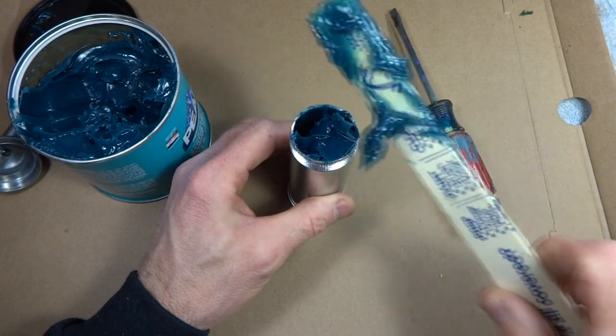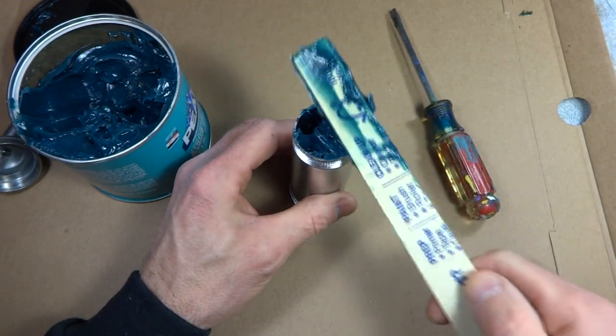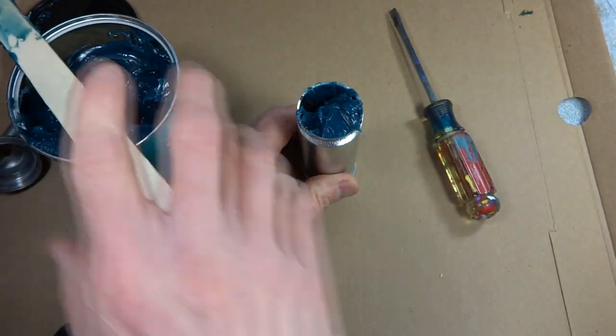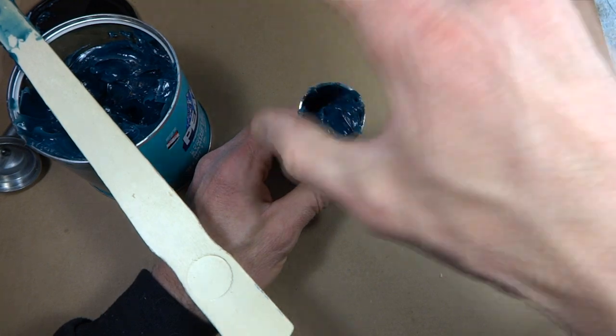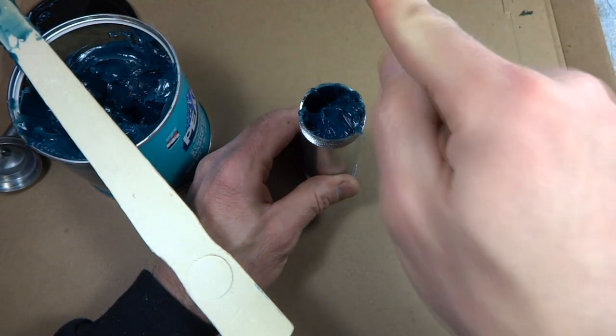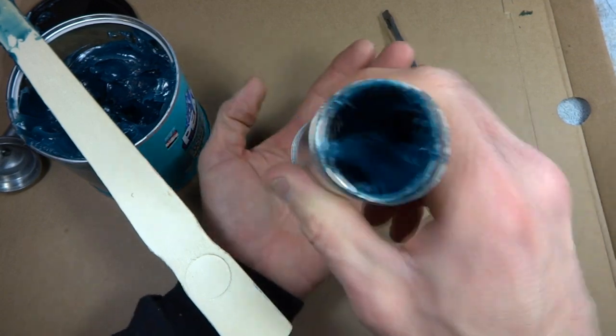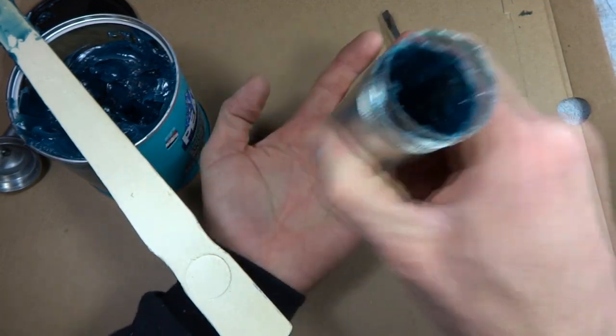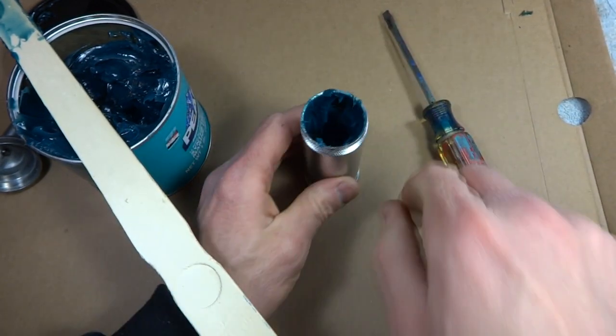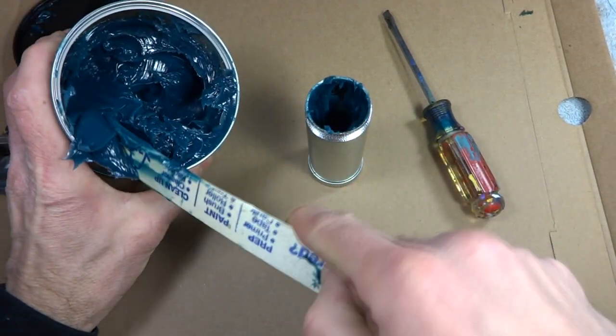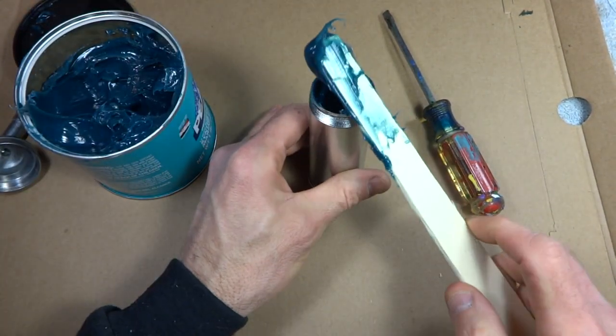The way this grease gun works is more from vacuum. It actually vacuums it out from here and sprays it out as opposed to anything pushing it up. So if you have air in there, it will lose the vacuum.